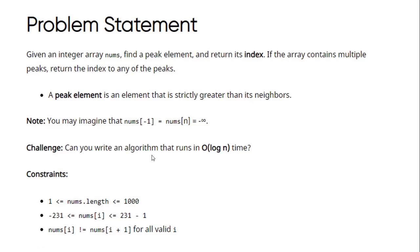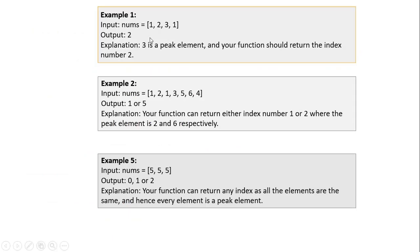Let's understand this with the help of a few examples. In the first example, the given array consists of the integers 1, 2, 3, and 1. The largest integer among all these numbers is 3. Now, indexing in Python starts from 0, so 1 is at the 0th index, 2 is at the first index, and 3 is at the second index. Hence the output should be 2, since 3, which is the peak element, is present at the second index.